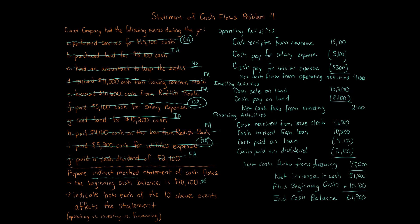The purpose of the statement of cash flows is to show the change between those two numbers. To summarize, the indirect method statement of cash flows always starts with operating activities at the top, then investing activities, then financing activities. Once you have all three, sum them together to get your net increase or decrease in cash, then add or subtract that from the beginning balance of cash to get your ending cash balance, showing the change on the balance sheet.